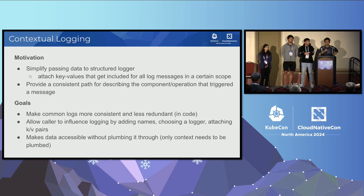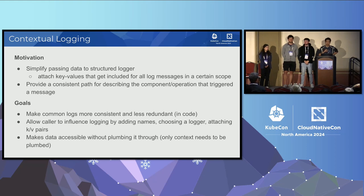That way, you don't actually have to pass pods and nodes into deeply nested methods interspersed throughout Kubernetes. This makes logging considerably simpler for Kubernetes developers, and you can make the information that you're logging very consistent. This greatly simplifies the method signatures in the Kubernetes code base — you don't have to pass pod name and node name everywhere. Instead, you just pass the context, which is supposed to be Golang best practice anyway.